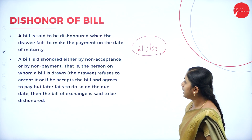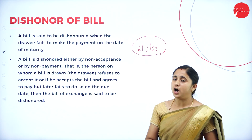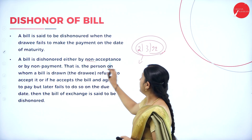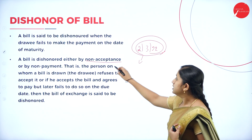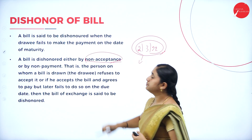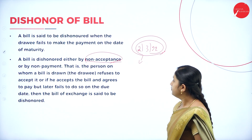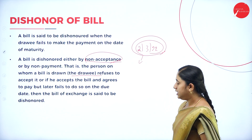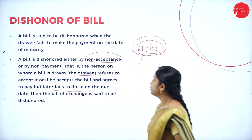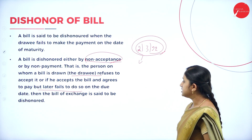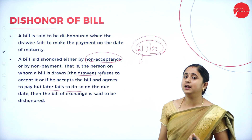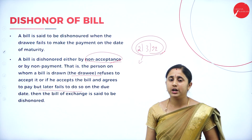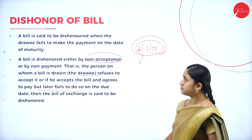A bill is dishonored either by non-acceptance or by non-payment. Either non-payment, or if the acceptor fails to pay on the particular date, it is considered dishonor of bill. Also, non-acceptance: if the acceptor fails to accept the bill, then it is also considered as dishonor of bill. The person on whom a bill is drawn — the drawee — may refuse to accept it, or if he accepts the bill and agrees to pay but later fails to do so on the due date, then the bill of exchange is said to be dishonored.